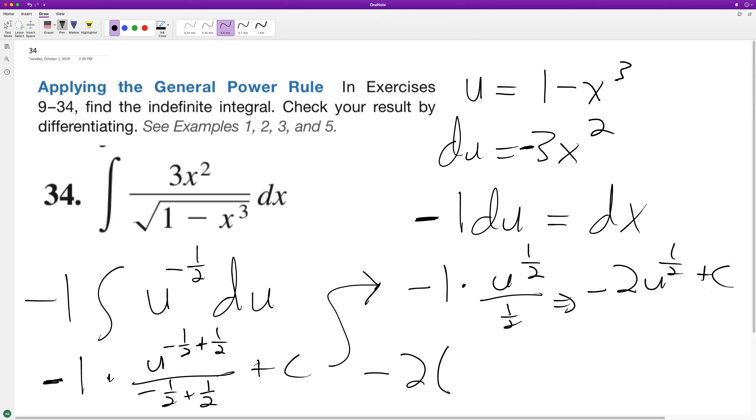Sub back in, we get negative 2 times 1 minus x cubed raised to the 1 half plus c. Alright, so that's the final integral.